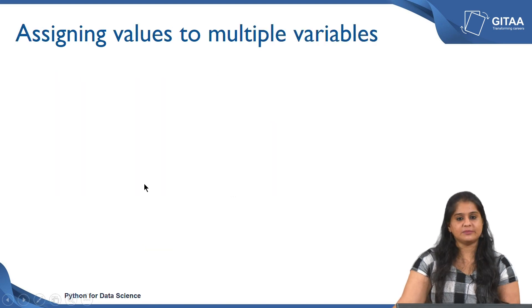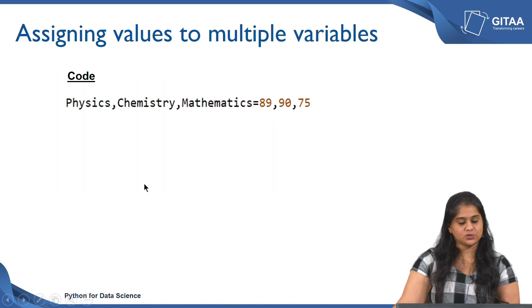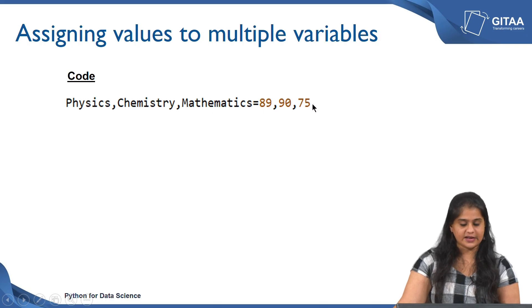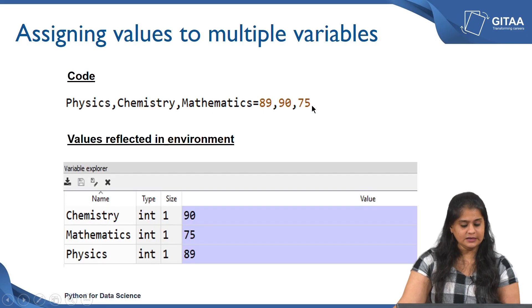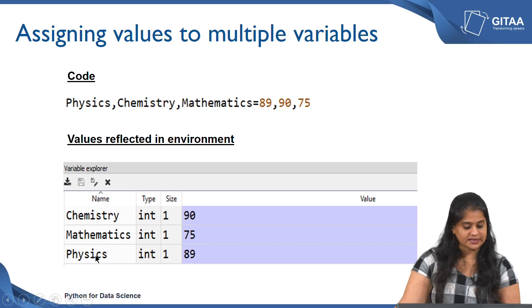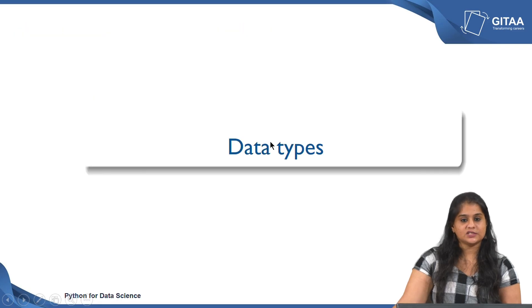If you want to assign multiple values to variables, you can create all the variables at once and sequentially assign the values. If you run this command, you will see that the values of the variables chemistry, mathematics, and physics have been assigned accordingly.